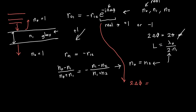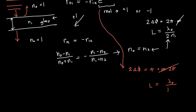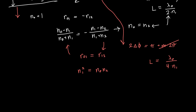Now let's take the other case, where the exponential equals −1, meaning 2·delta_phi = π (taking m=0 for simplicity). This gives a film thickness of L = λ0/(4n1) — a quarter wavelength in the material. The condition r01 = +r12 then requires, after plugging in the refractive indices, that n1² = n0·n2 — in other words, n1 must equal the geometric mean of n0 and n2: n1 = √(n0·n2). When this holds, we get perfect destructive interference at that wavelength.